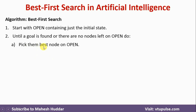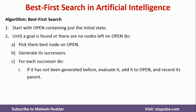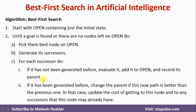First, we pick the one node from open which is best at a given point of time — we select one node which is best at that particular point. Then we generate the successors of that node. For each successor, if it has not been generated before, we put that node into open and record its parent. If it has already been generated, we change the parent if the new path is better than the previous one, because the parent may be different and we need to select the better one based on distance.